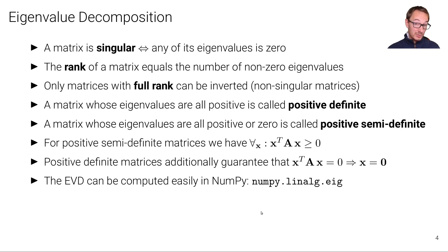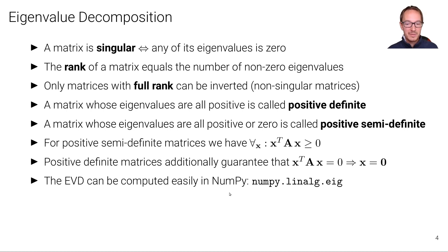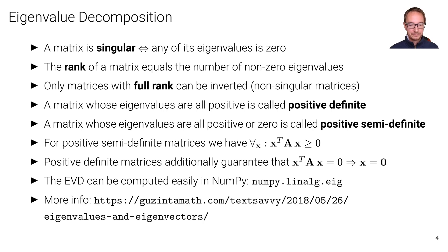It is of course possible to derive and calculate the eigenvalue decomposition by hand. But in practice, we can use great numerical linear algebra packages. For example, in Python we can use numpy.linalg.eig to decompose a matrix A into its eigenvectors and eigenvalues with a single call. If you want to know more about how to do this by hand, I recommend the linked resource.